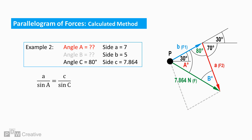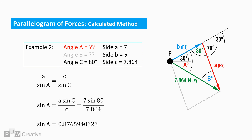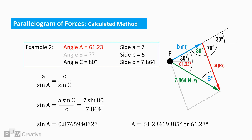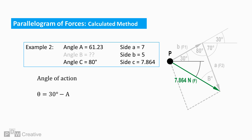The sine rule is again used for angle A. Reworking for sine A and inversing gives an angle of 61.23 degrees. But in this example, this is not the angle of action, and the angle of F1 action must be deducted from angle A. Therefore, the angle of resultant force action is 30 degrees minus 61.23, giving an angle of action of minus 31.23 degrees.